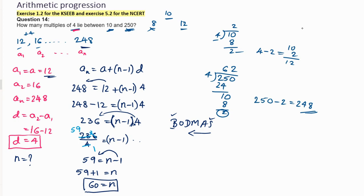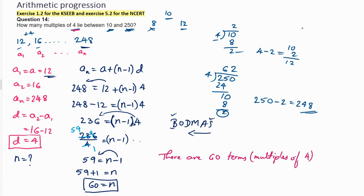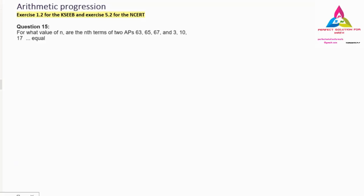So how many multiples of 4 lie between 10 and 250? There are 60 terms. The concluding statement: 60 multiples of 4 lie between 10 and 250. This question is easy once we understand how to find the first term and the last term.